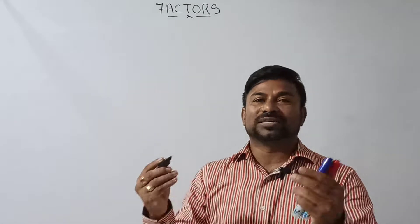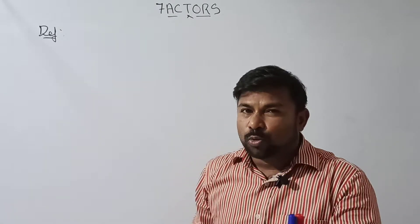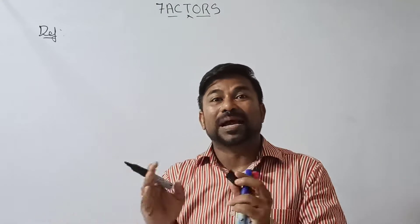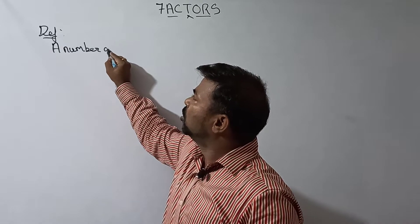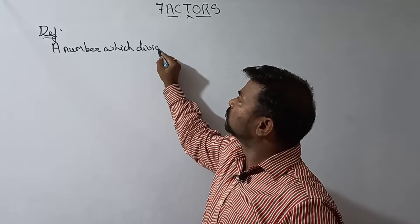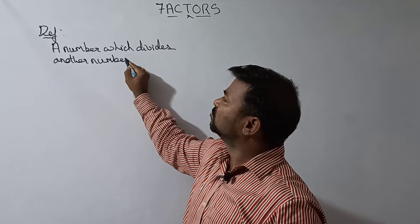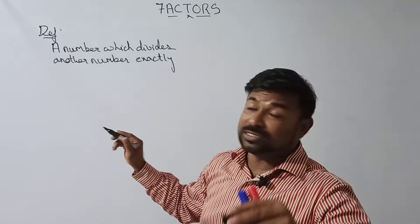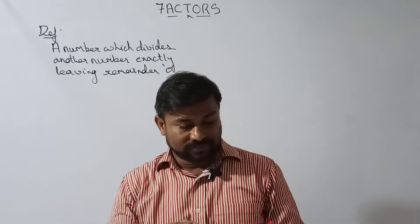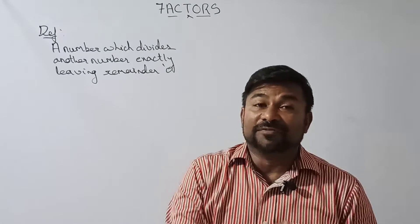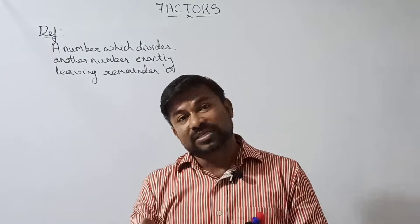So what is a factor? A number which exactly divides another number by leaving a remainder zero is called a factor. If any number is able to divide another number leaving remainder zero — meaning it is dividing exactly — then we can say that number is a factor of the other number.